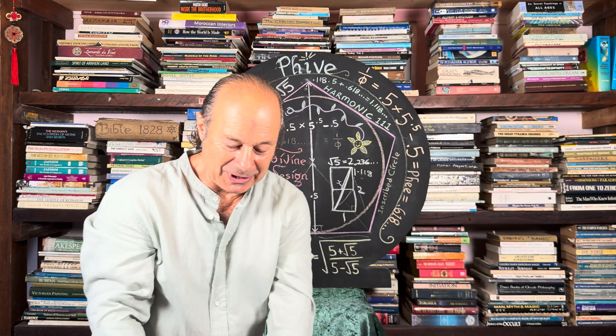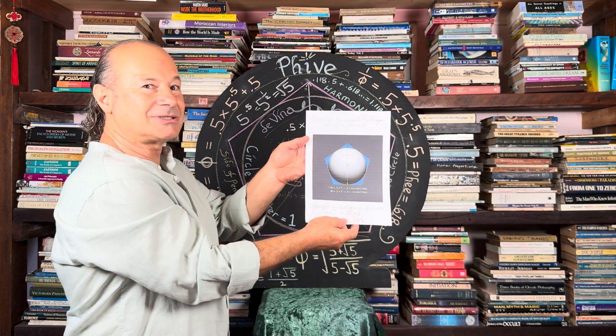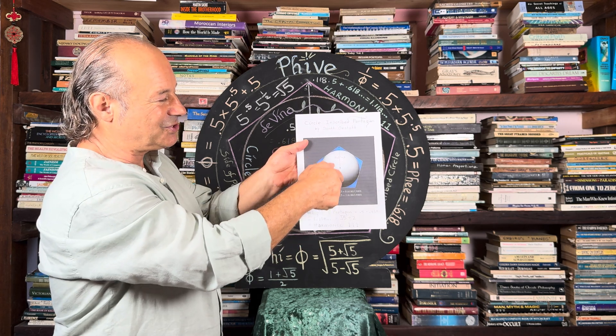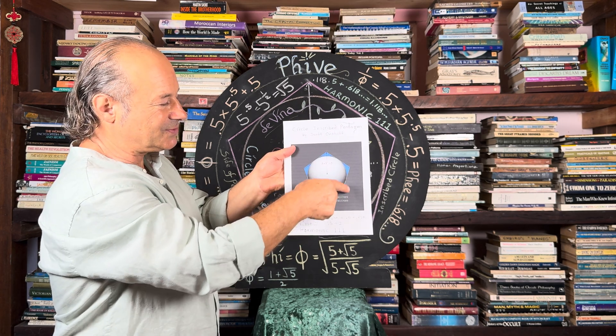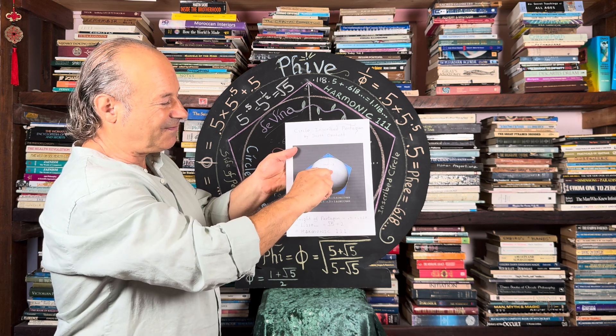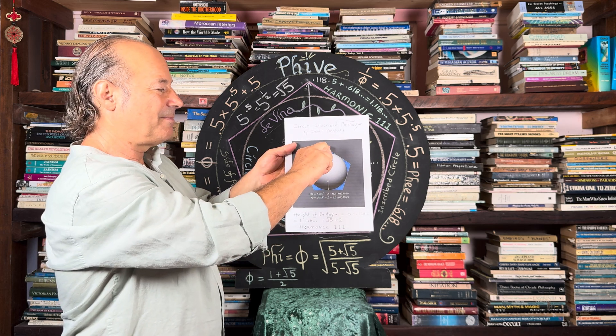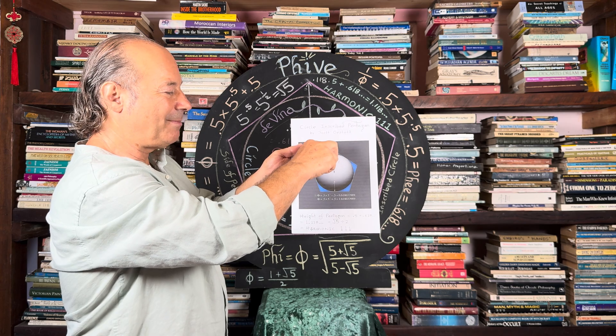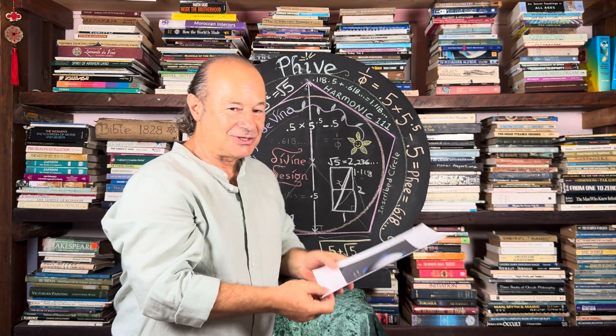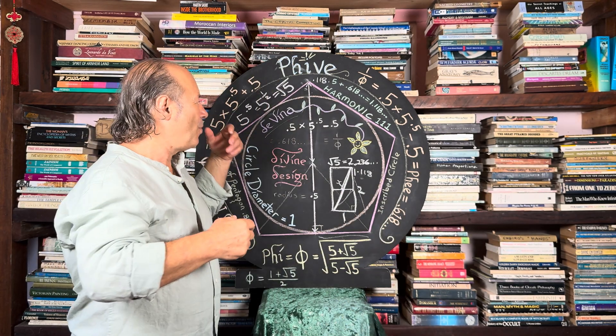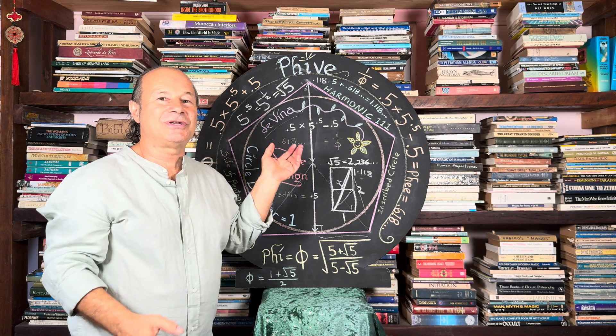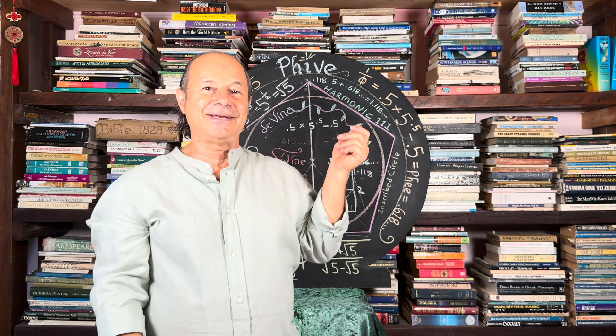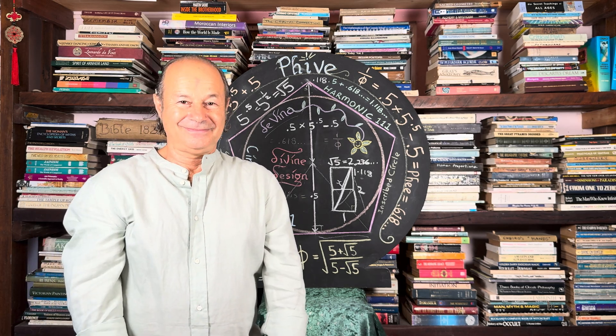So this was all inspired by my friend, Scott Onstott, who showed us that the original height of this Pentagon, if the circle is 1, the whole distance is 0.5 or a half plus 0.618, which is harmonic 1.111. So I just wanted to let you know that the more you study sacred geometry, you're really studying or investigating the anatomy of who we are.